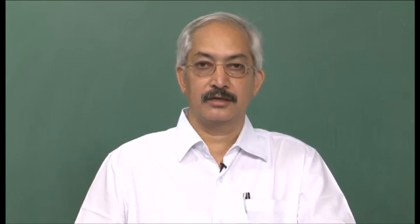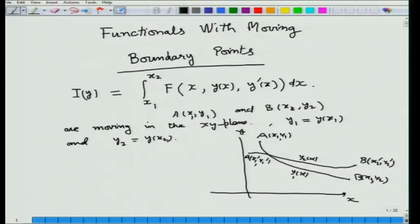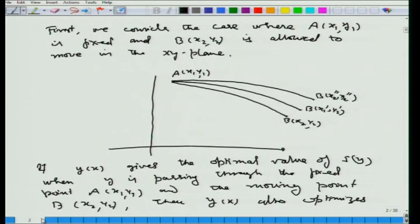Welcome viewers to the NPTEL lecture series on the calculus of variation. This is the fifteenth lecture of the series. Recall that in the last lecture, the fourteenth lecture, we had considered the functionals with moving boundaries. The integral we considered was of the simplest type: I(y) equal to integral from x1 to x2 of f(x, y(x), y'(x)) dx, where the boundary points a=(x1,y1) and b=(x2,y2) can move freely in the xy-plane or constrained to move along a curve.